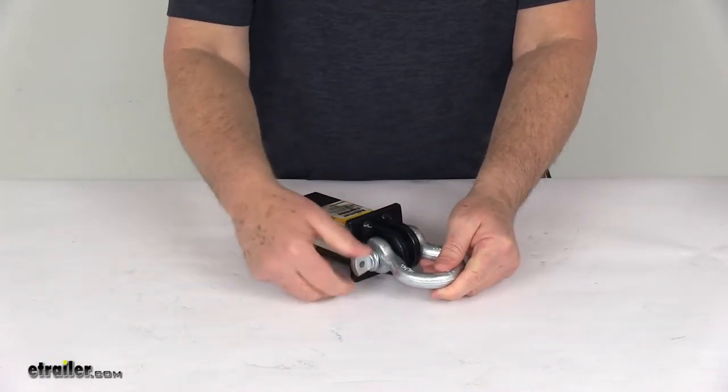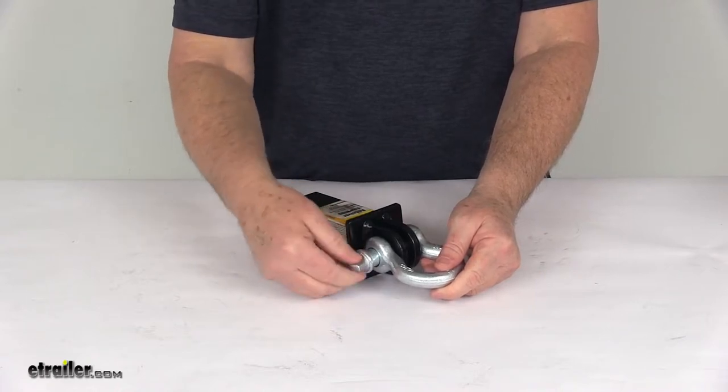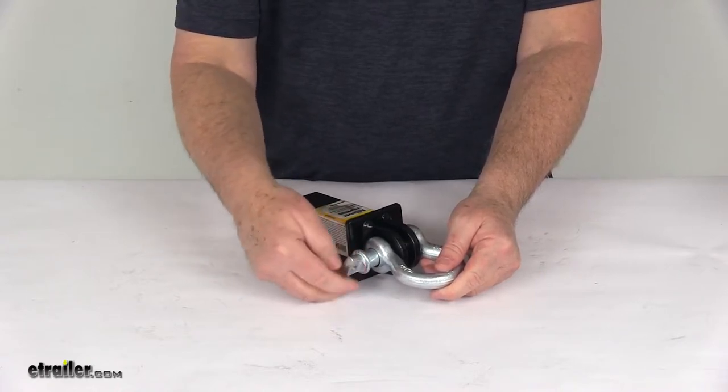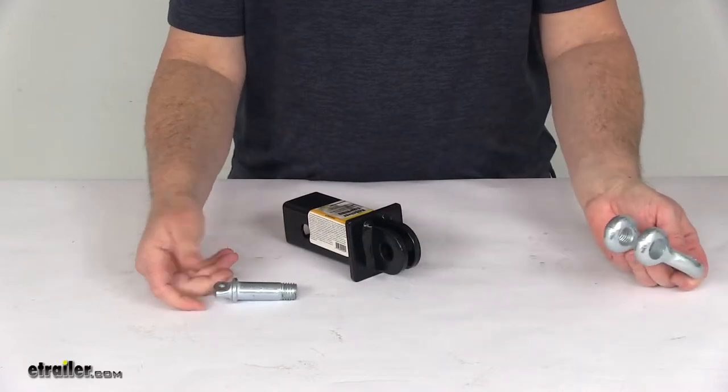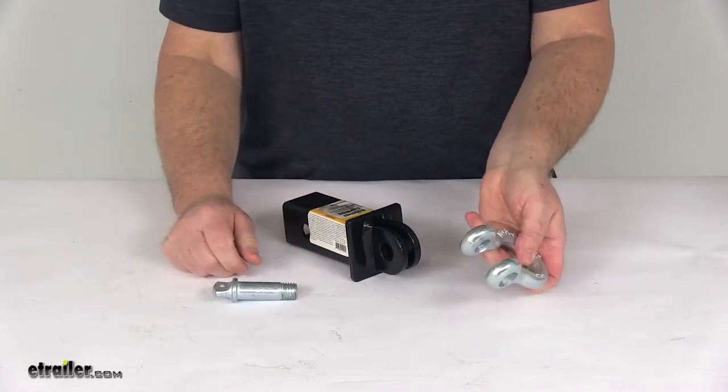And if you need to take that loop off, what you can do is just unscrew this pin right here. Unscrew that far enough, it'll come out, and the loop will come off if you need to attach it with the loop off.